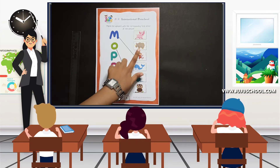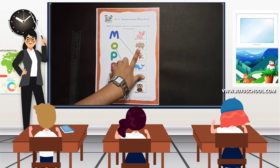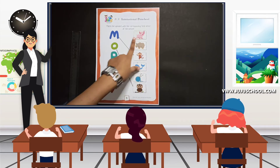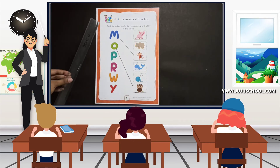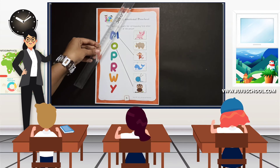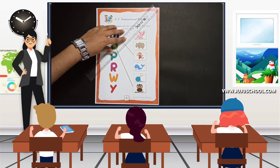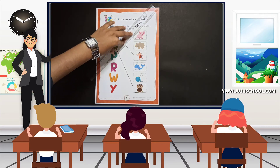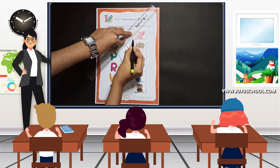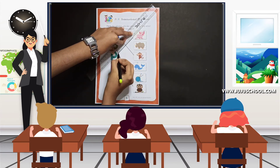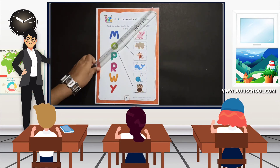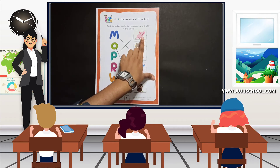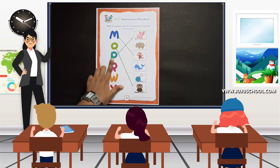Next we move on to the alphabet P. P for rhinoceros? No. P for pig? Yes, you're right, that's good! Now take your scale and your pencil, place it from P to pig and make a line. That's really good — P for pig. Pig starts from the letter P.